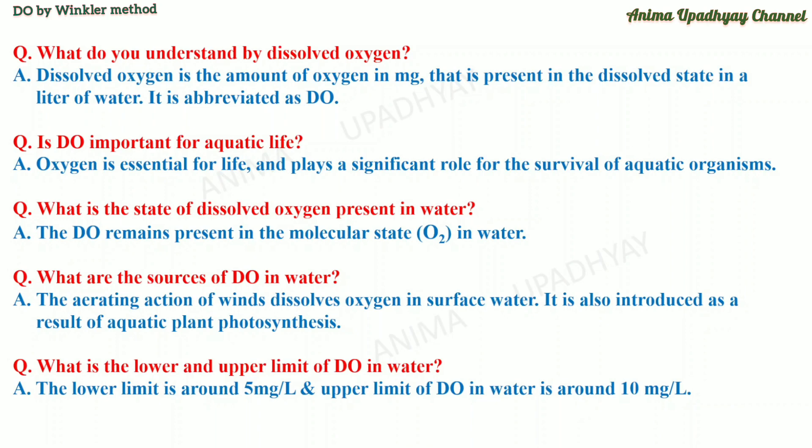We will cover it in the question-answer format, so you can prepare for your theory as well as your viva voce exam also. What do you understand by dissolved oxygen and how is it abbreviated? The dissolved oxygen is the amount of oxygen in milligrams that is present in the dissolved state in a litre of water, and it is abbreviated as D-O.